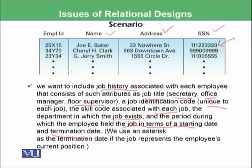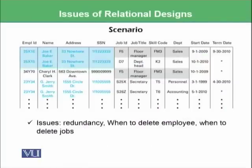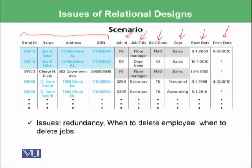So we want to add all of those things into this relation. Here we have the same relation from the last slide, and we have added job ID, title, skill code, department, start date, and term date. 'Static' means that this is the current job of the employee. So what kind of issues can you see in this particular situation?